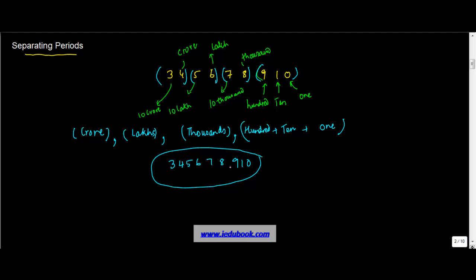Thousands is one period, so you add a comma here. Lakhs is one period, so you add another comma here. Since there's nothing before crores, we don't put anything there. In a nutshell, each period must be separated from the others by a comma.